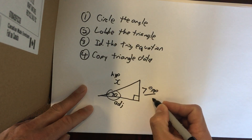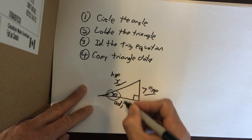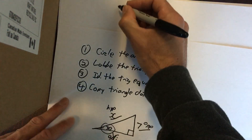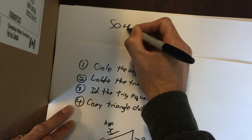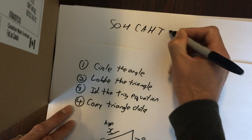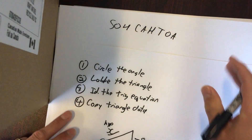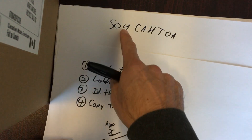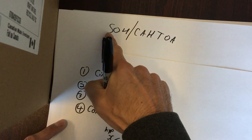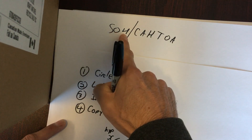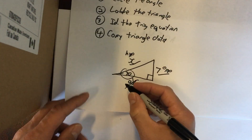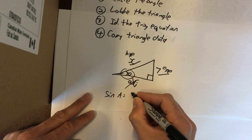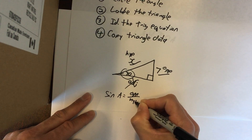Step three: identify the trig equation. I know the opposite, I'm looking for the hypotenuse, and I don't care about the adjacent. So I want to find the trig equation that involves opposite and hypotenuse. The O and H are in sine — sine is opposite over hypotenuse. So the sine of the angle equals opposite over hypotenuse.